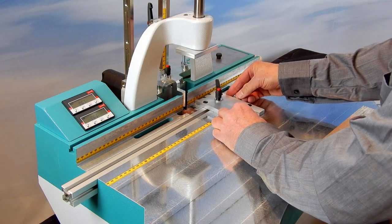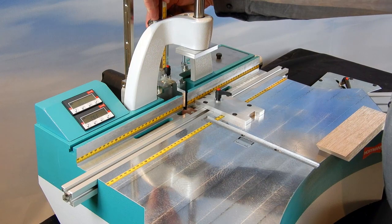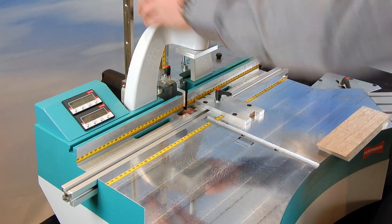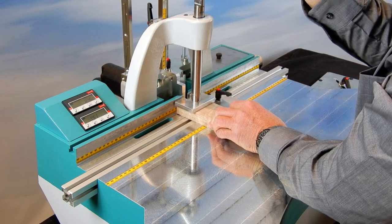The keyway positions are adjusted with a standard butt stop. Both the scale in the table or the scale integrated into the rear fence can be used for positioning.